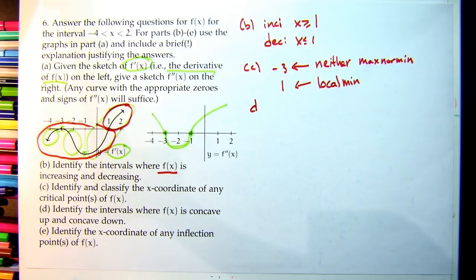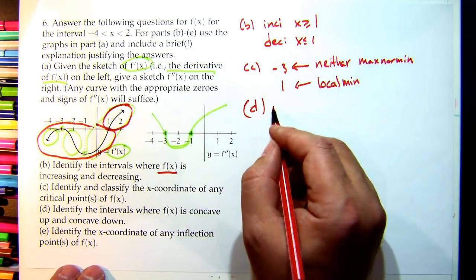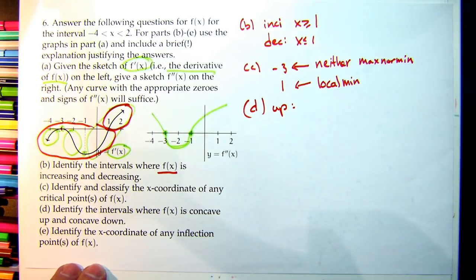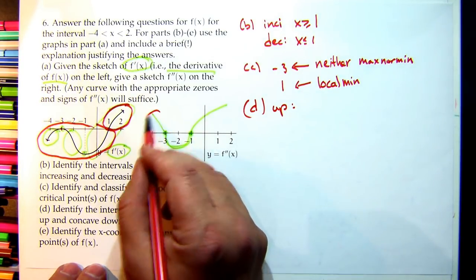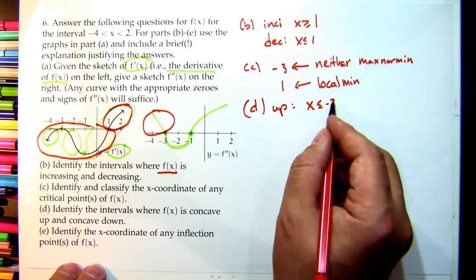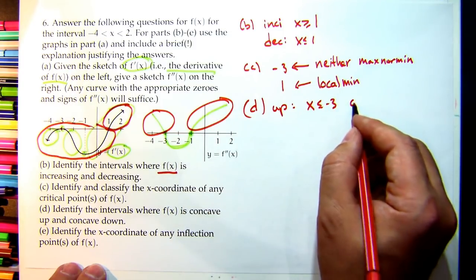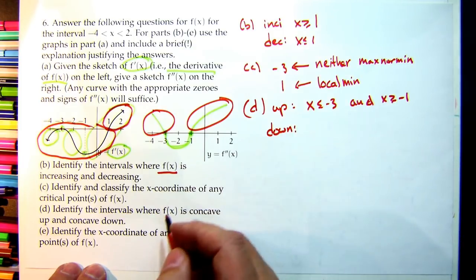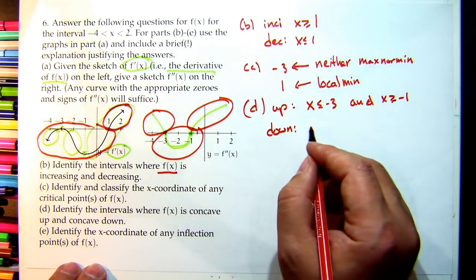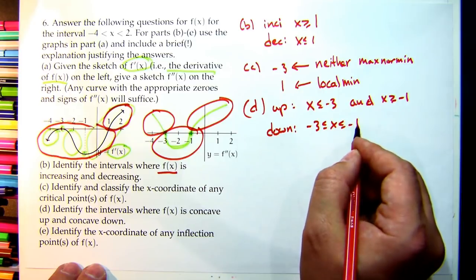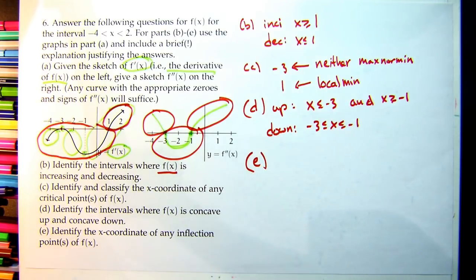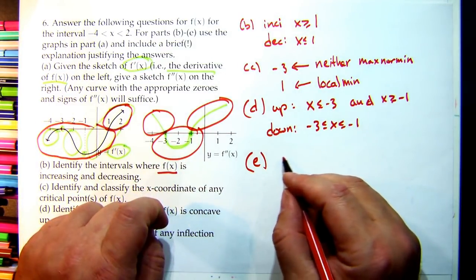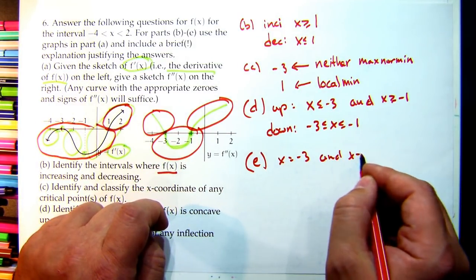Part D: concavity and inflection points. f is concave up where f'' > 0 — that's where f' is increasing: x < −3 and x > −1. f is concave down where f'' < 0 — that's where f' is decreasing: −3 ≤ x ≤ −1. Inflection points occur where concavity changes: at x = −3 and x = −1.